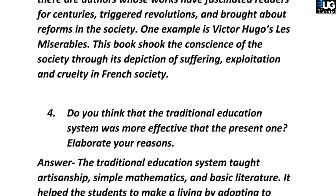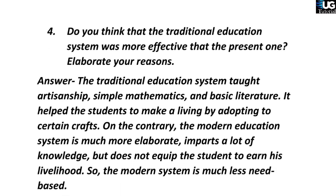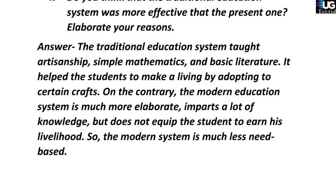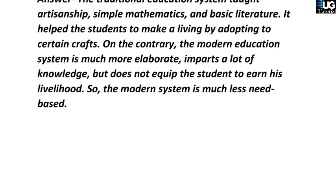Question four: Do you think that the traditional education system was more effective than the present one? Elaborate your reasons. Answer: The traditional education system taught artisanship, simple mathematics, and basic literature. It helped students to make a living by adopting certain crafts. On the contrary, the modern education system is much more elaborate and imparts a lot of knowledge, but does not equip the student to earn their livelihood. So the modern system is much less need-based.